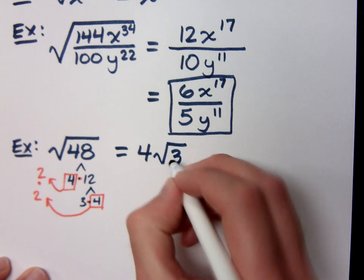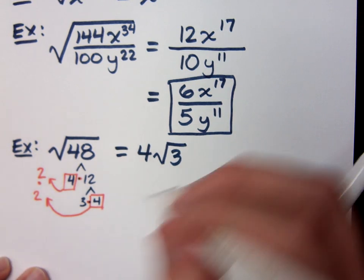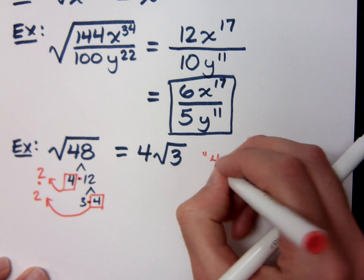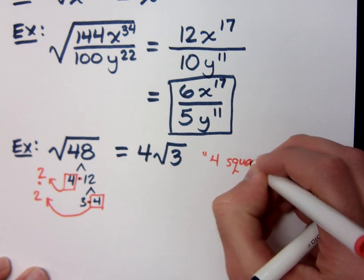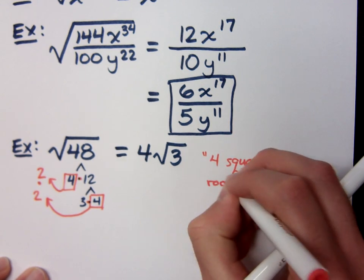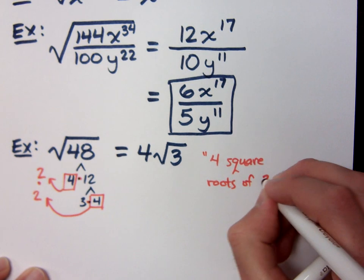So what comes on the outside of the radical? And the 3 stays on the inside. Make sure you do read this correctly. This is 4 square roots of 3.